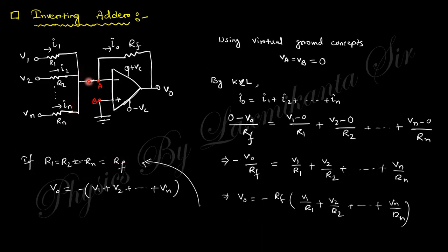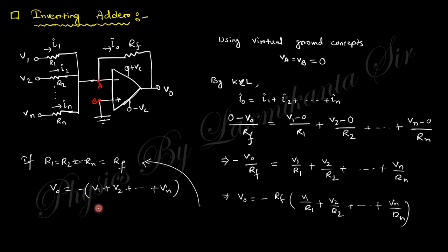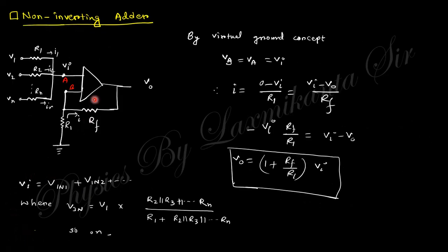The next topic is the inverting adder. The output is the sum of input voltages. Multiple voltages are connected through separate resistors to the inverting port. Using the virtual ground concept, the potential at point A is zero. Applying KCL: (0 − Vo)/Rf = (V1 − 0)/R1 + (V2 − 0)/R2 + ... When R1 = R2 = Rn = Rf, these cancel out, and Vo equals the summation of input voltages with a negative sign — hence called the inverting adder.